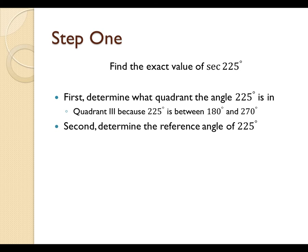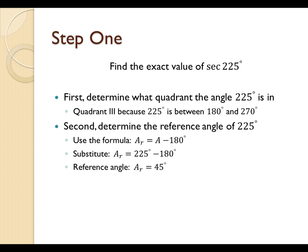Second, we need to determine the reference angle. So, we will use one of the formulas from earlier, A sub R equals A minus 180 degrees to determine this. First, we will substitute 225 degrees for A and then subtract 180 from 225. This will give us our reference angle of 45 degrees.